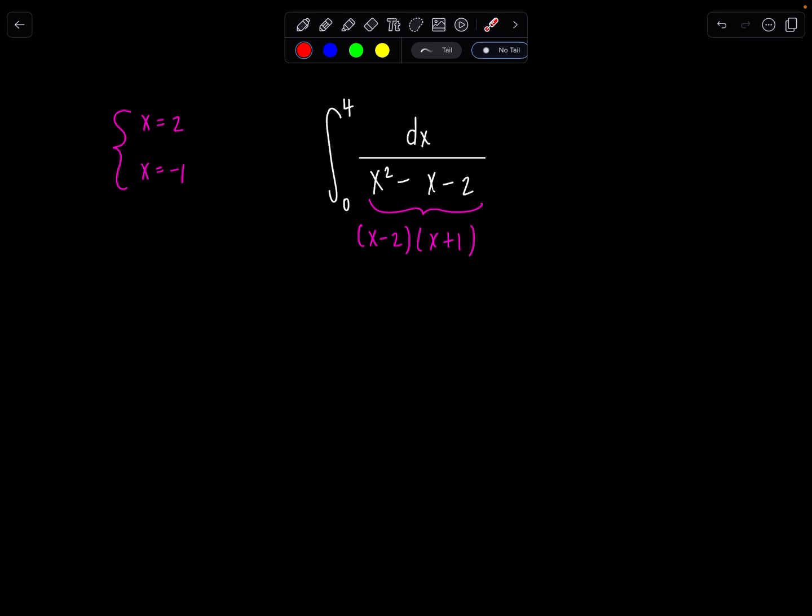Do either of those x values lie on the interval from which we're going to be evaluating this integral? Let's see. 0 to 4, yes. 2 is included in that interval. Negative 1, I don't have to worry about. It's outside the interval. So what do we do?